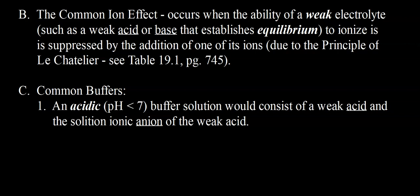We have two types of buffers: acidic buffers and basic buffers. An acidic buffer has a pH less than 7, and consists of a weak acid and the conjugate base of that weak acid. The example on page 745 is an acidic buffer — acetic acid, a weak acid, present with a relatively large quantity of its conjugate base, acetate. The pH of that solution is less than 7, so that's an acidic buffer.